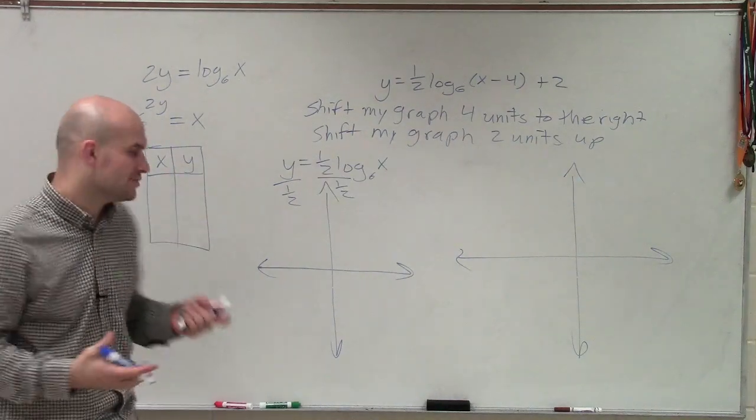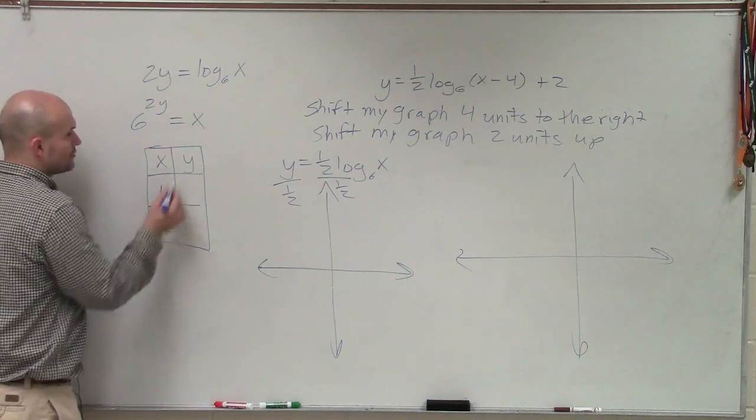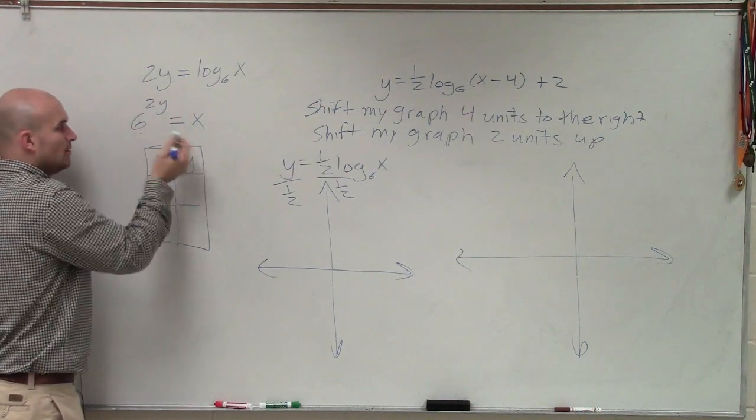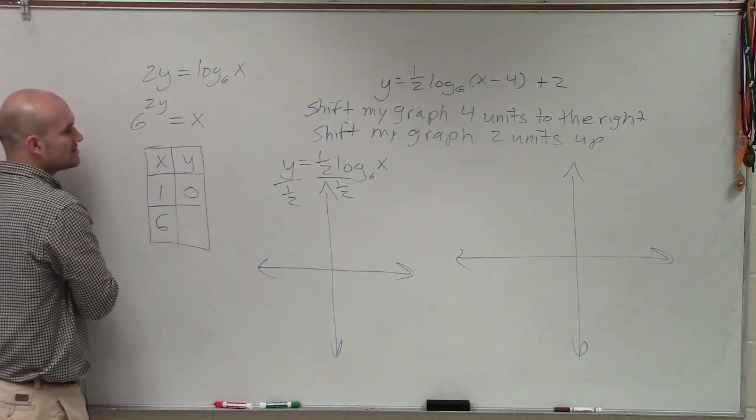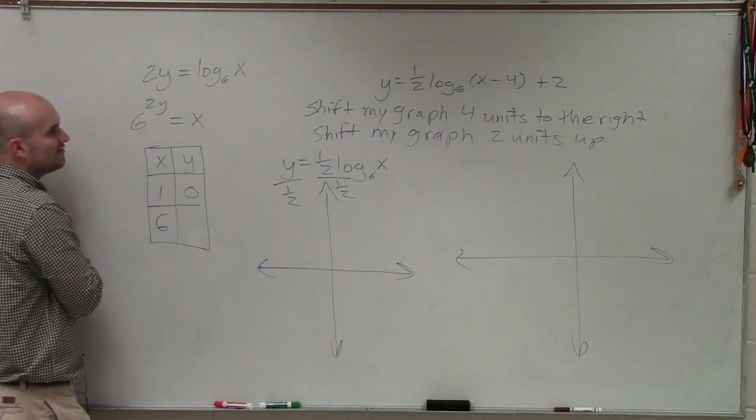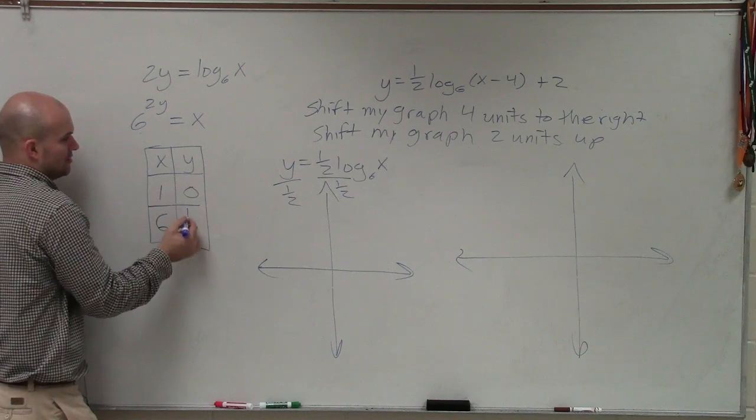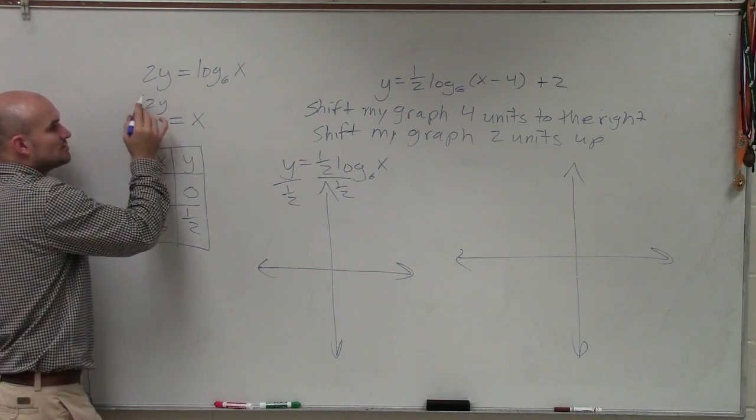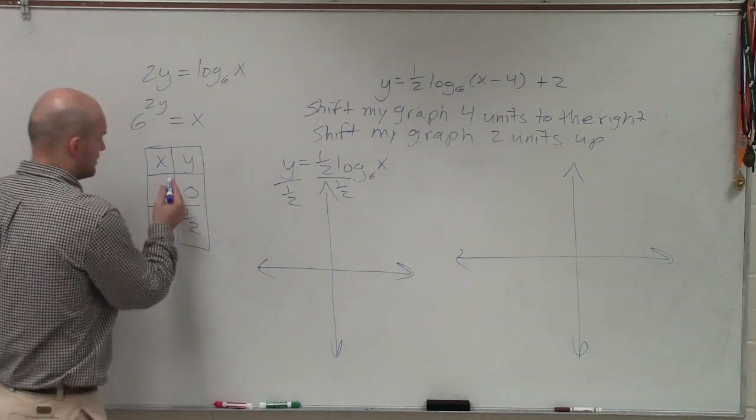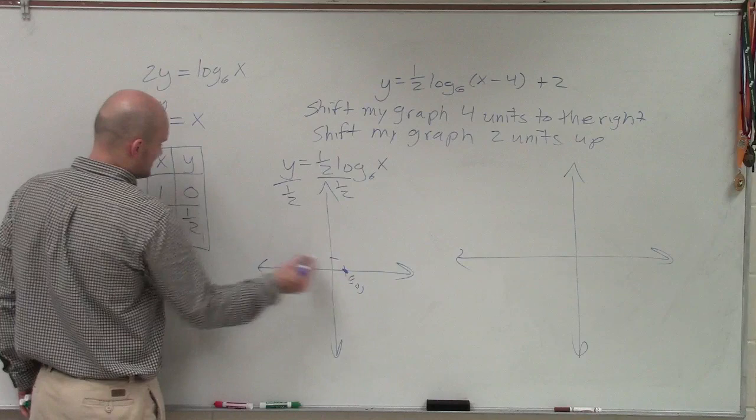And a lot of times, again, what I like to do when I'm choosing my x values is I want to choose when is x going to equal 1 and when is x going to equal the base of 6. So x equals 1, obviously, when 6 is raised to a power of 0, 6 is going to be raised to a power of 0 when y equals 0. Then I need to look at, well, when is x going to equal 6? That means this is going to be raised to a power of 1. Well, 2 times 1 is going to leave me with 1½. So when y equals 1½, 1½ times 2 is 1. 6 raised to the first power is just going to equal 6. So now I have these two coordinate points that I'm going to want to graph.